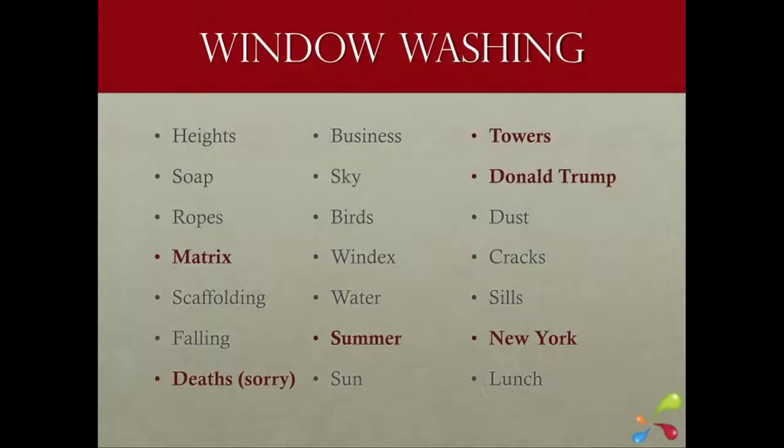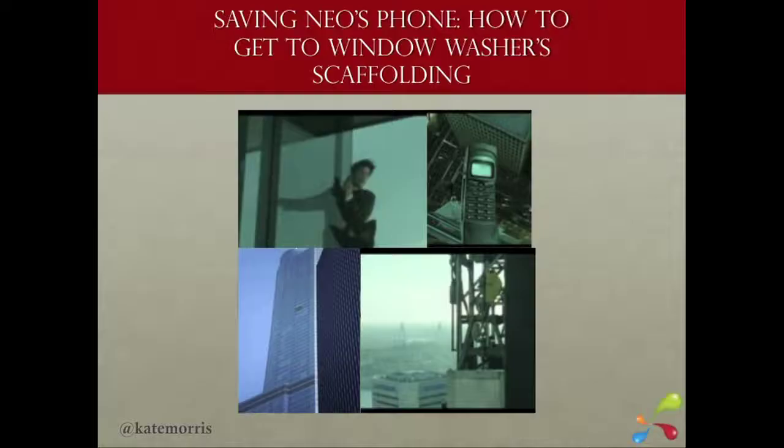The idea I initially came up with was 'saving Neo's phone' — how to get to a window washer scaffolding. If you took a company of window washers, showed them that clip, and asked how Neo could have gotten to the other side of that giant black divider and gotten over to the scaffolding — how could he have saved dropping his phone? That would be really interesting to read. This is more about getting mentions, likes, and people talking about it rather than links, but I find it personally fascinating.